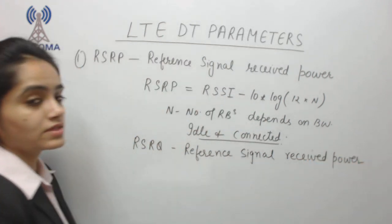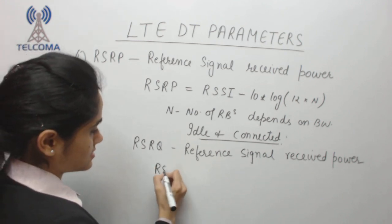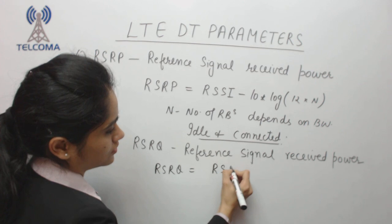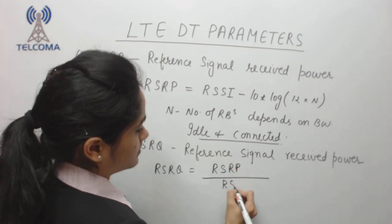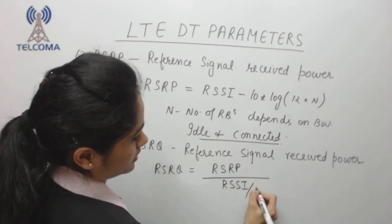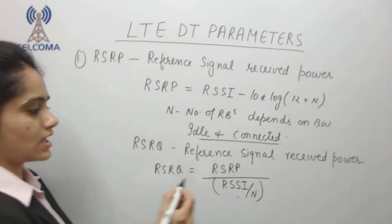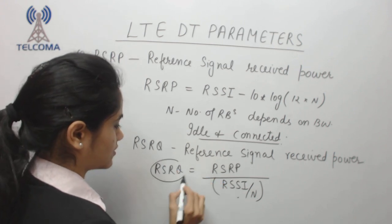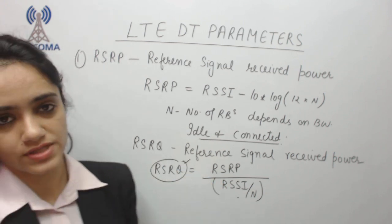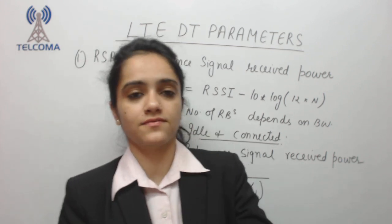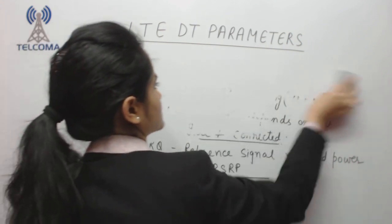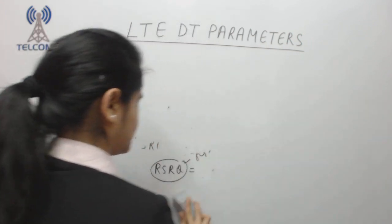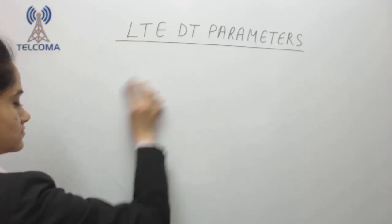RSRQ is directly proportional to RSRP divided by RSSI, multiplied by n. That means the more RSRP we have, the more RSRQ we will receive, indicating the quality of the signal we are receiving. This is the second parameter for drive test.